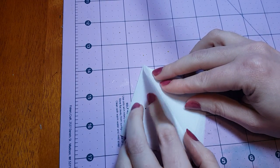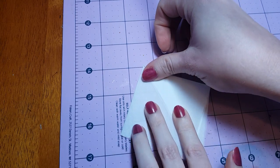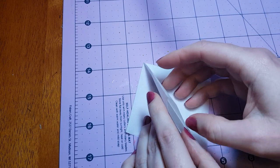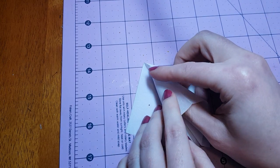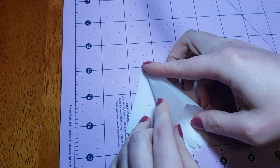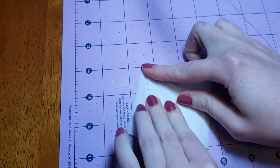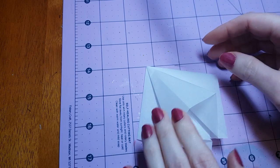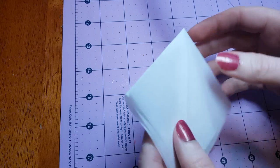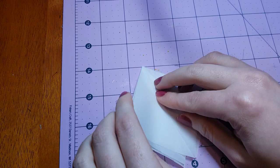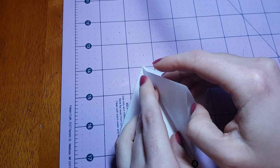Take one of these top flaps, the left or right, it doesn't matter. I'm going to fold it over to the right here, and then I'm going to squish that down to make a triangle. Flip the piece over and repeat on the opposite side to make another triangle.